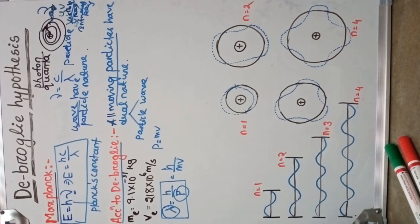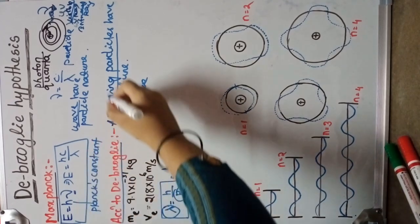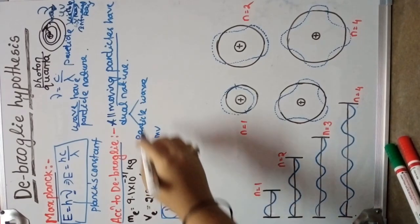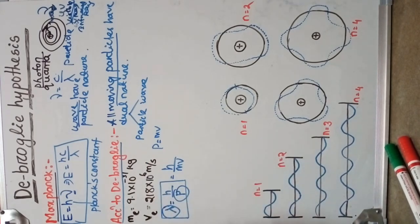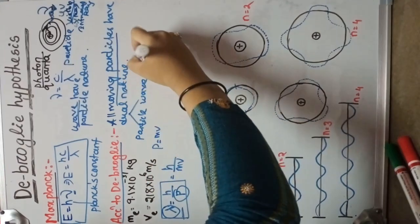Here the topic is that electrons have wave nature. All moving particles have dual nature — one is particle nature and another is wave nature. But the de Broglie wavelength is only applicable for microscopic particles. In the case of an electron, the mass of the electron is 9.1 into 10 to the power minus 31 kg.